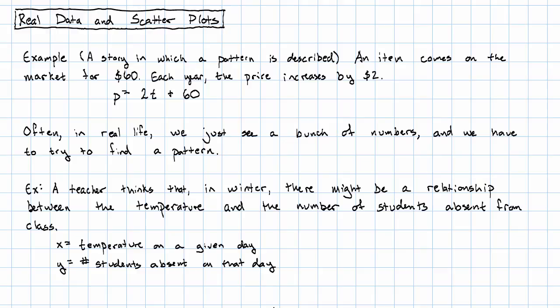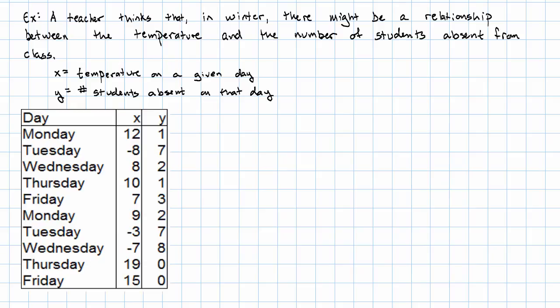So the teacher measures the temperature on several days, and then counts the number of students that are absent. And this is what she sees. Is there a pattern here? It's really hard to tell just by looking at these numbers by themselves.